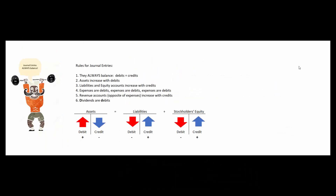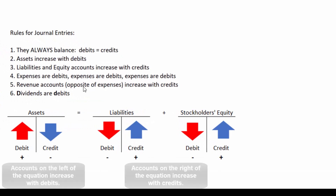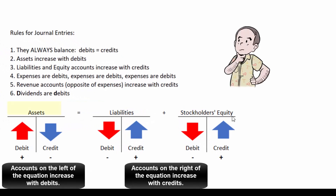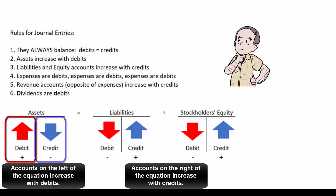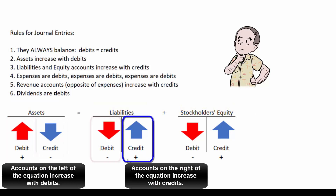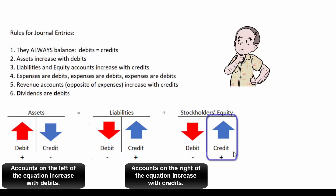Another way to remember the rules is to look at the accounting equation: assets equals liabilities plus equity. Assets increase with debits and decrease with credits. Liabilities increase with credits and decrease with debits. Stockholders' equity increases with credits and decreases with debits.